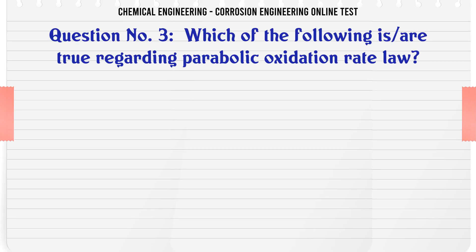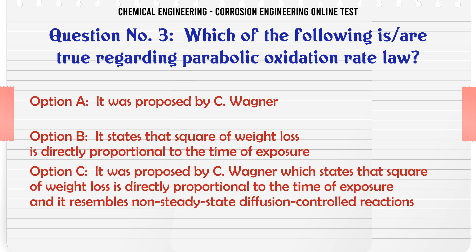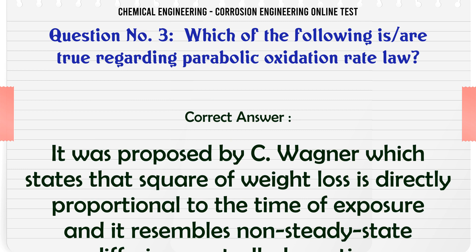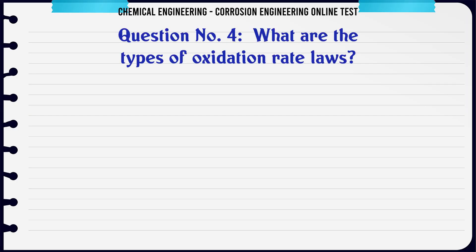Which of the following is true regarding parabolic oxidation rate law? A. It was proposed by C. Wagner. B. It states that the square of weight loss is directly proportional to the time of exposure. C. It was proposed by C. Wagner, which states that the square of weight loss is directly proportional to the time of exposure, and it resembles non-steady-state diffusion-controlled reactions.